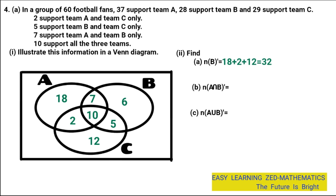An alternative method: take the total number of fans, which is 60, and subtract the total of the numbers in A intersection B, which are 7 and 10. 10 plus 7 equals 17. Then 60 minus 17 equals 43. So the number of fans not found in A intersection B is 43.